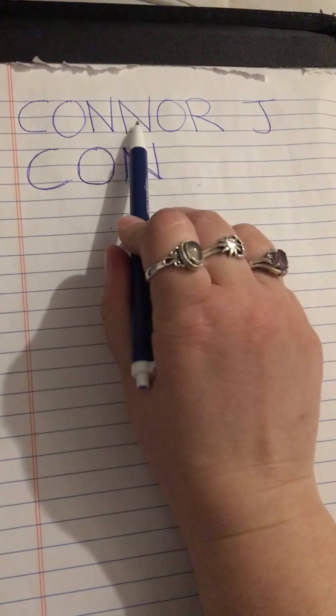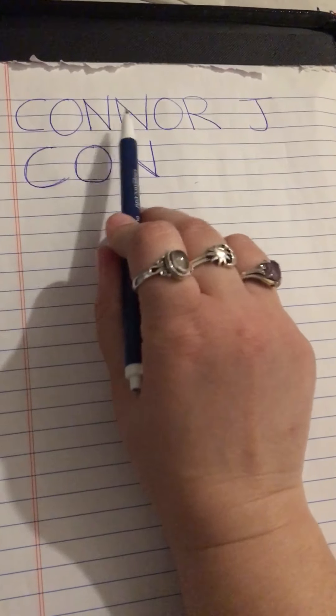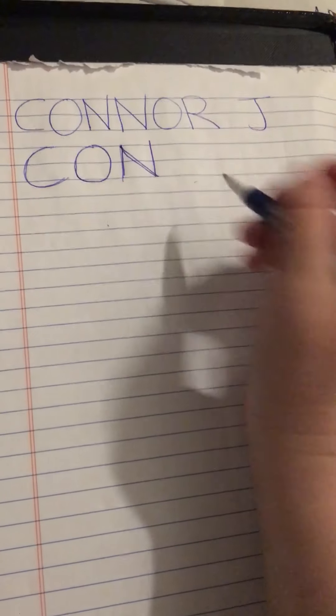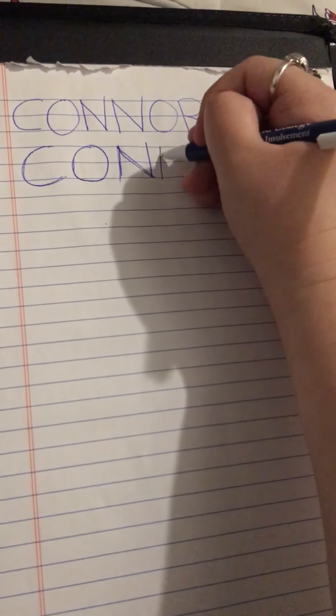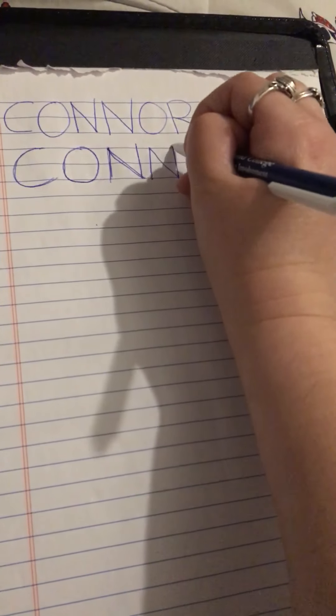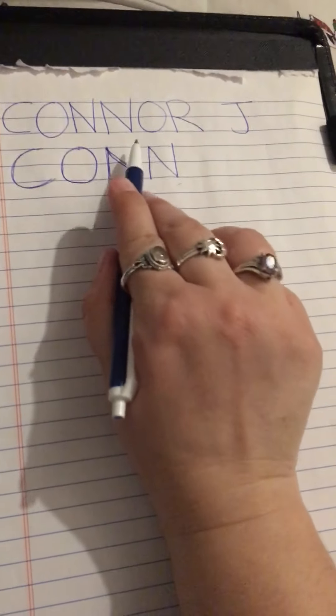We're going to have another N now because it's C-O-N-N. So after our N we're going to draw another N. We're going to start at the top and draw our line down just like before. After we've drawn our line down we're going to pick our pens back up, put them at the top of that line again, and come diagonal down and then straight back up again.